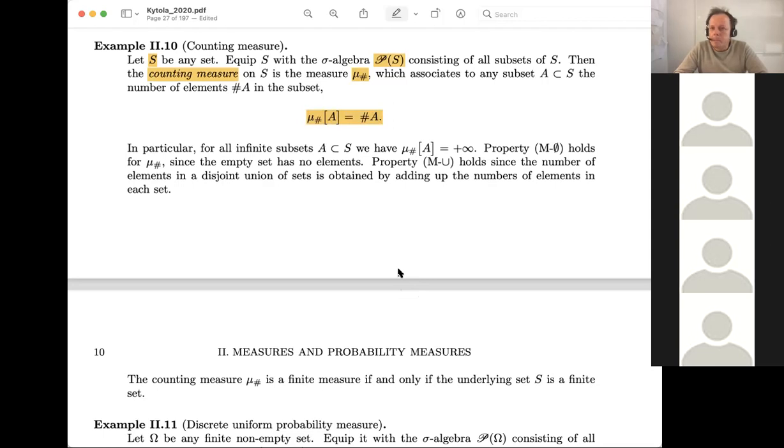Is that a measure? Remember, there are two things to check. So to check that, is this a measure or is this not a measure, we have two things to check. We need to check what would be the counting measure of the empty set. So this is, by definition, the number of elements in the empty set. Of course, that's zero, so as it should be, so that's okay.